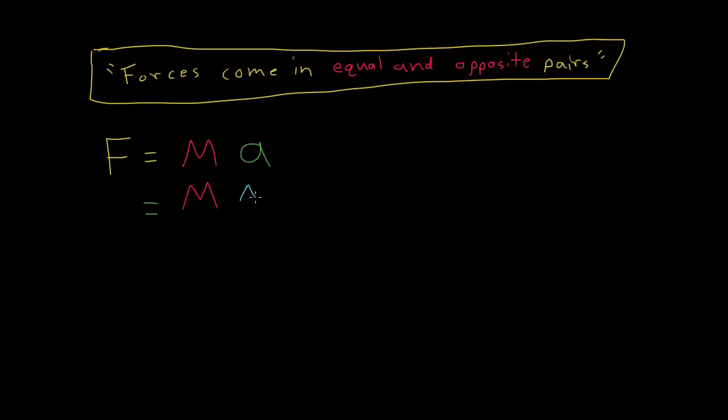But we can write this acceleration as a change in velocity divided by a change in time. That's what acceleration is. It measures the change in velocity, measures how velocity changes as time changes. So now if we take the quantity mass times velocity here, mass times velocity, we're going to use the letter P to mean momentum. P is momentum, mass times velocity.